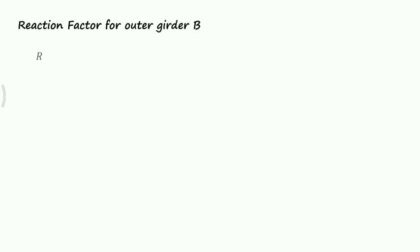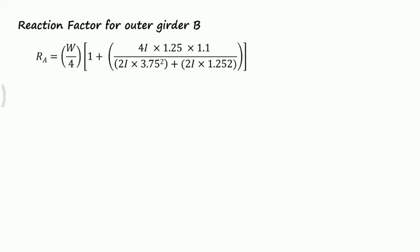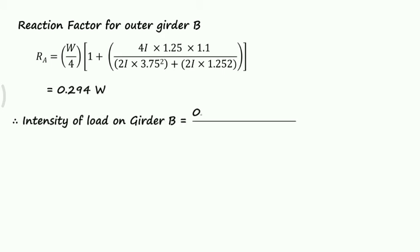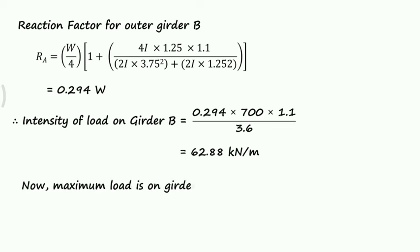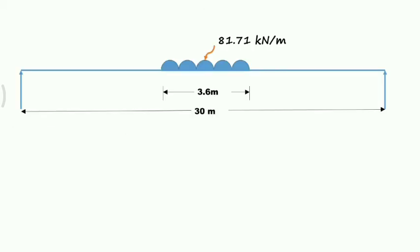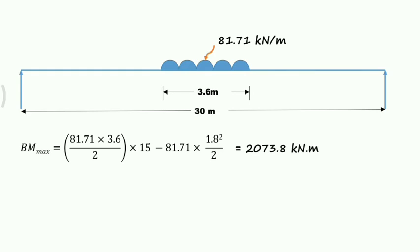For inner girders B and C, the only change is the dx value. For girder B, dx = 1.25 m, giving a reaction factor of 0.294W. The intensity of load on girder B = 0.294 × 700 × 1.1 / 3.6 = 62.88 kN/m, whereas the maximum load is on girder A at 81.71 kN/m. To obtain the maximum live load moment, the vehicle is placed exactly midway on the 30-meter span, giving a maximum bending moment of 2073.8 kN·m.